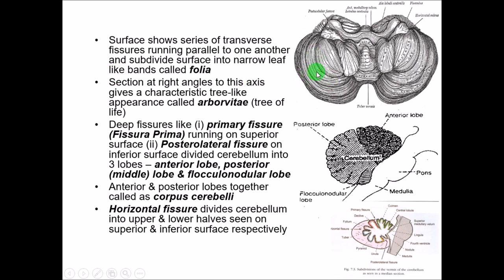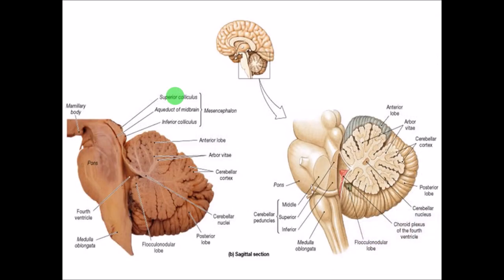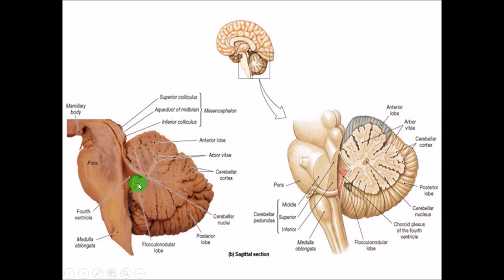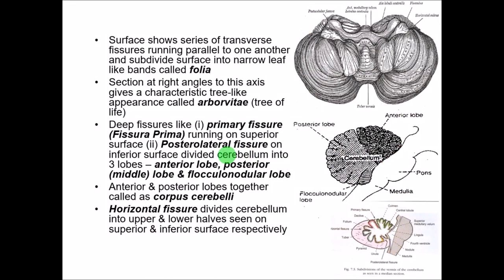A section taken at right angles to the axis of the cerebellum gives a characteristic tree-like structure called the arbor vitae — meaning tree of life. Because this is a very important structure for life, it is called the tree of life. Deep inside, the section looks like a tree.